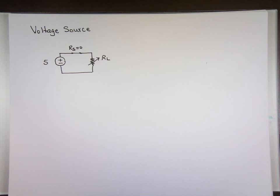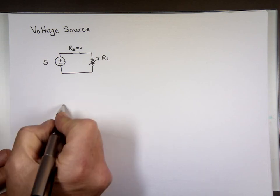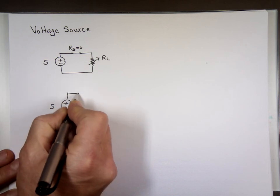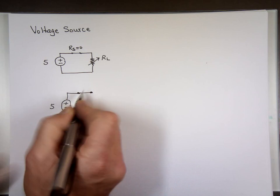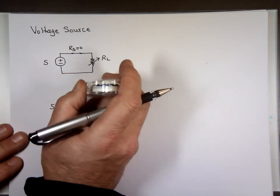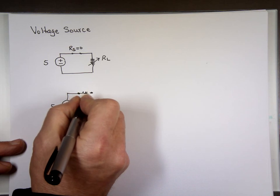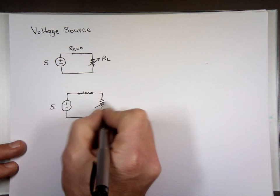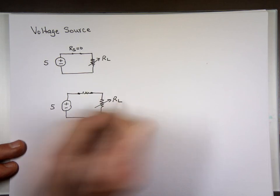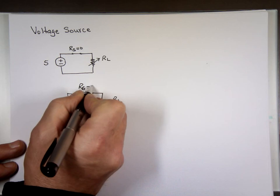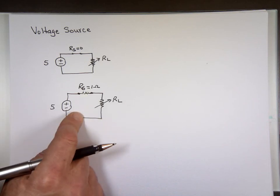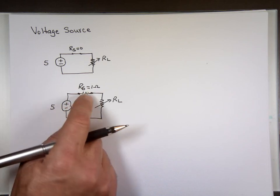So if you do the math for a real source, treating it as non-ideal, we've got 5 volts here and you actually have an input resistor — R sub S — a small one. Let's call it 1 ohm. That's what all sources look like in real life: they have a small resistor in series with the source. Now the current will never be infinite.